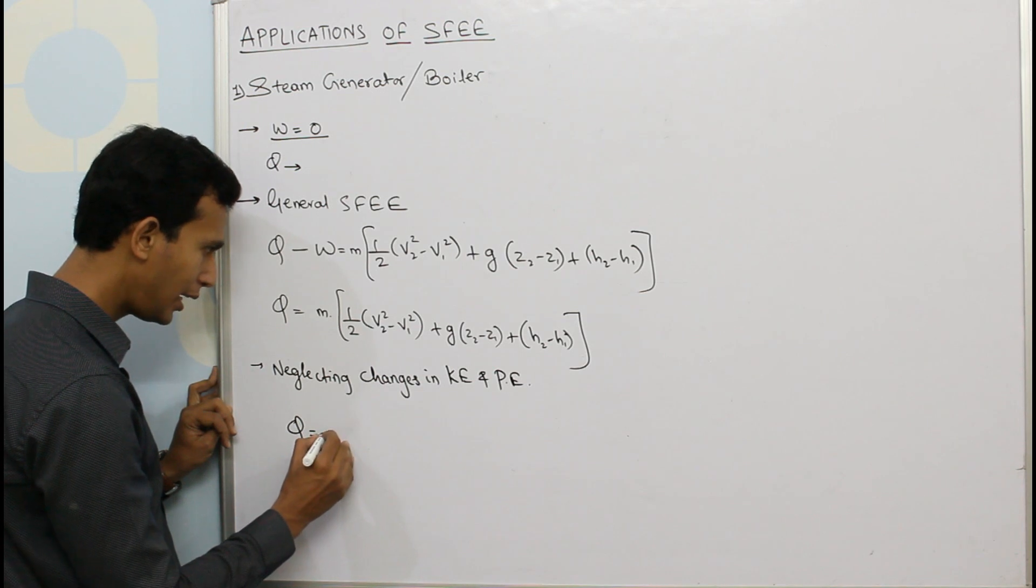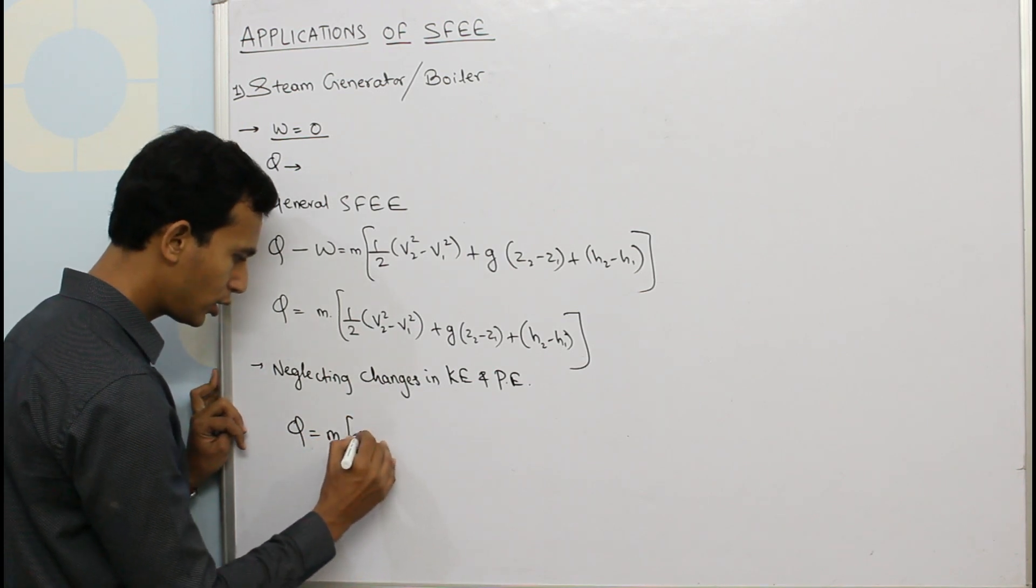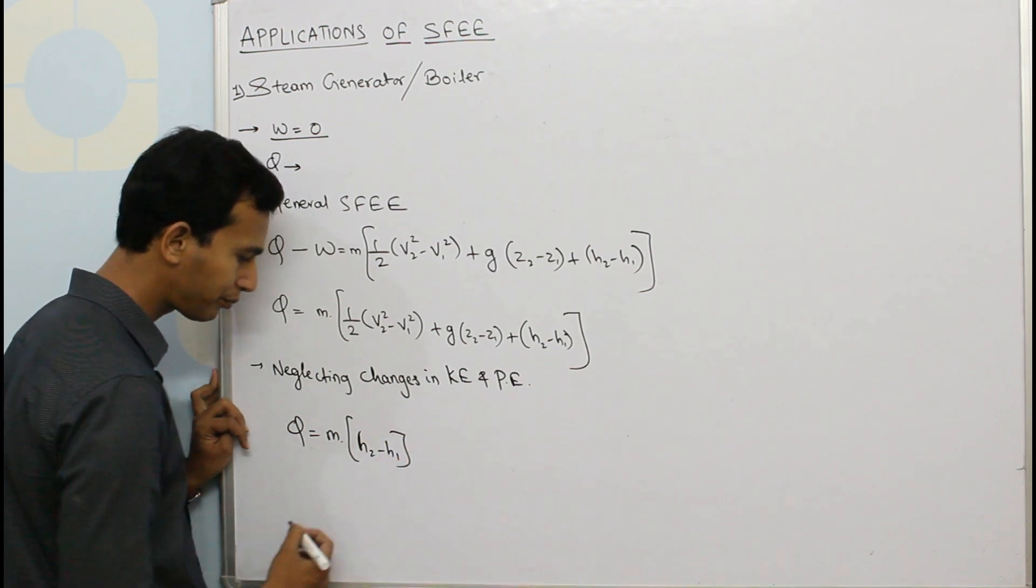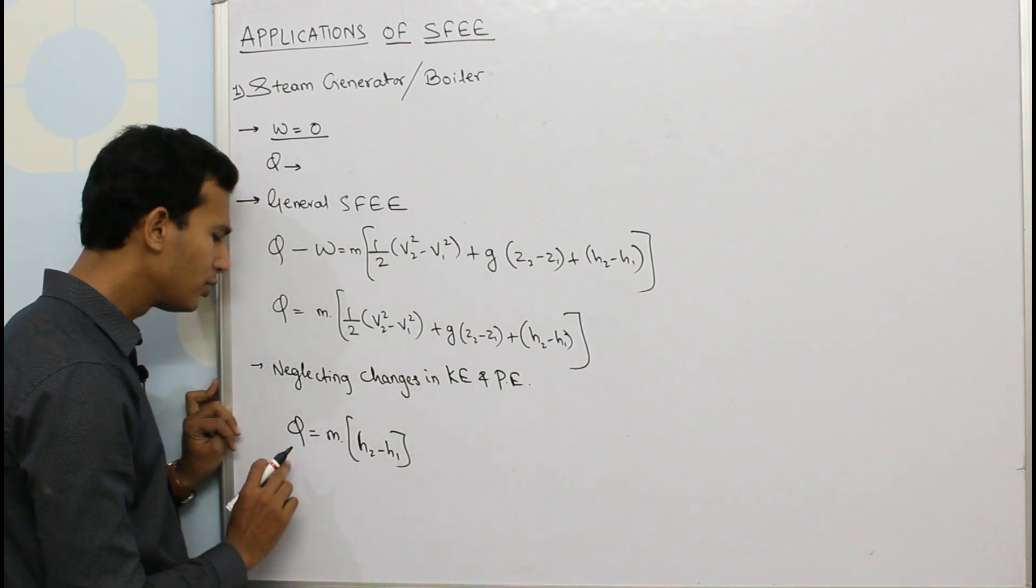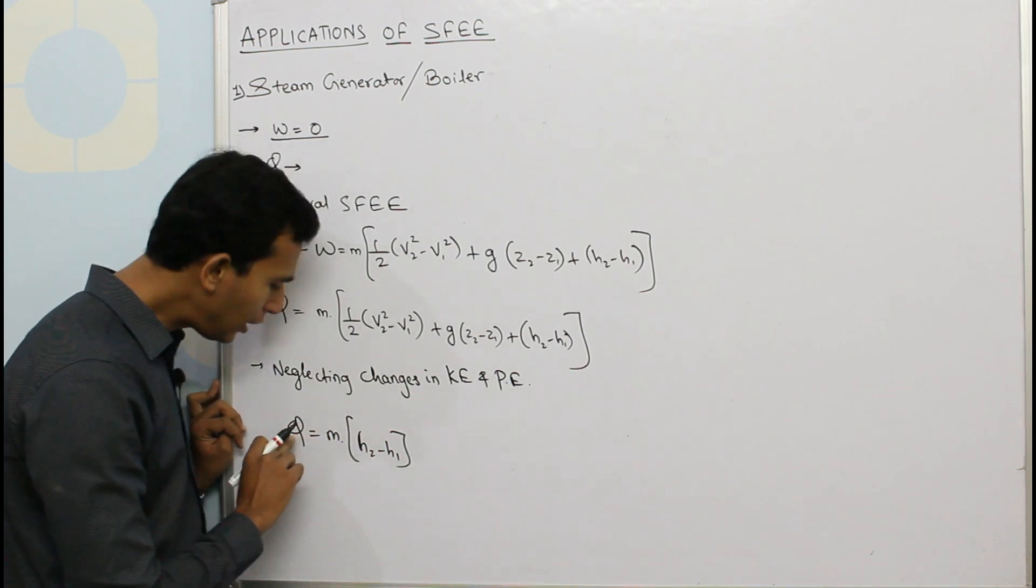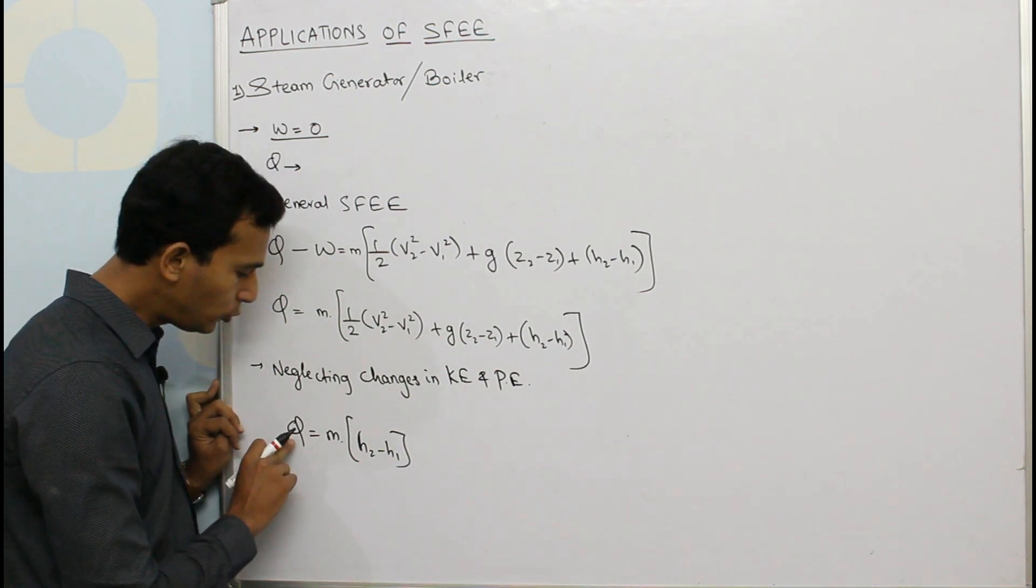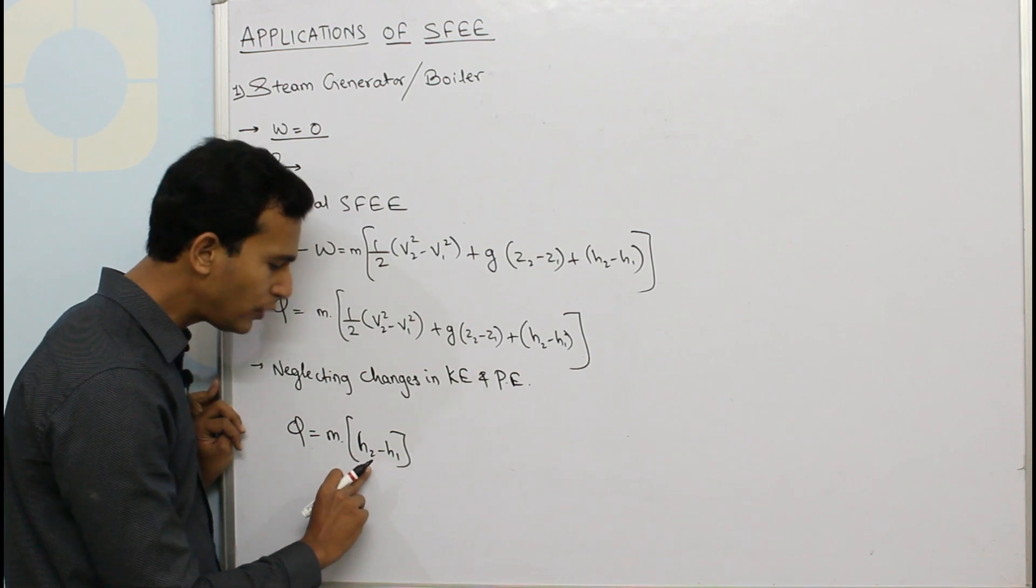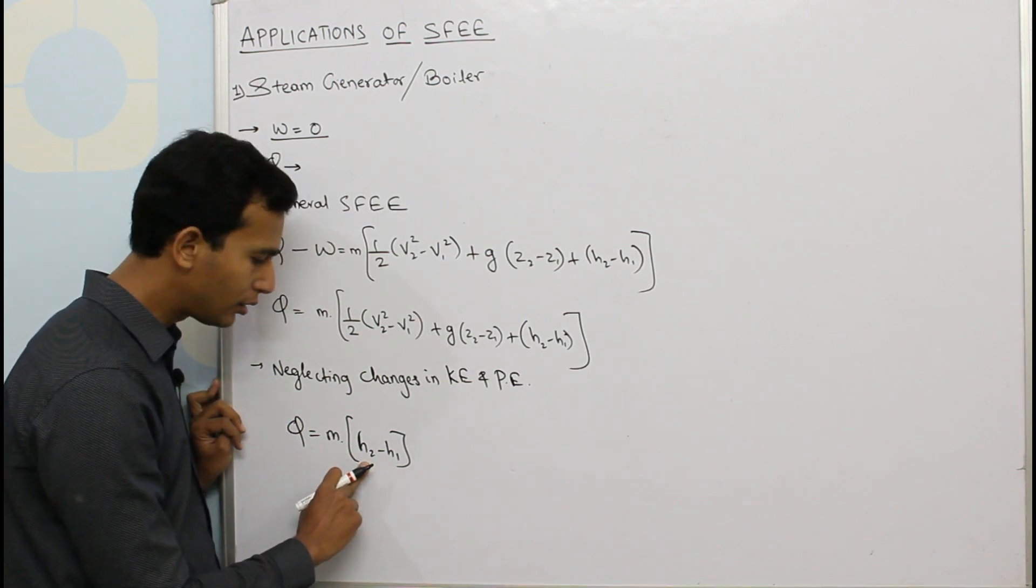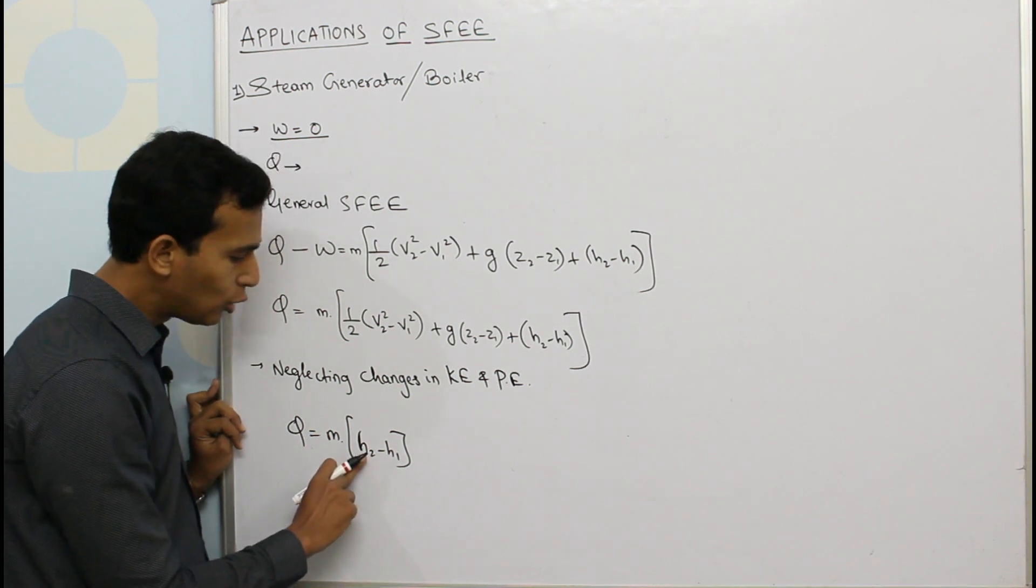So this is the only equation—that means whatever amount of heat we are supplying to the boiler, that is being used to increase the enthalpy of the water. As we can see, H₂ is the output enthalpy and H₁ is the input enthalpy. So here output is more, input is less.